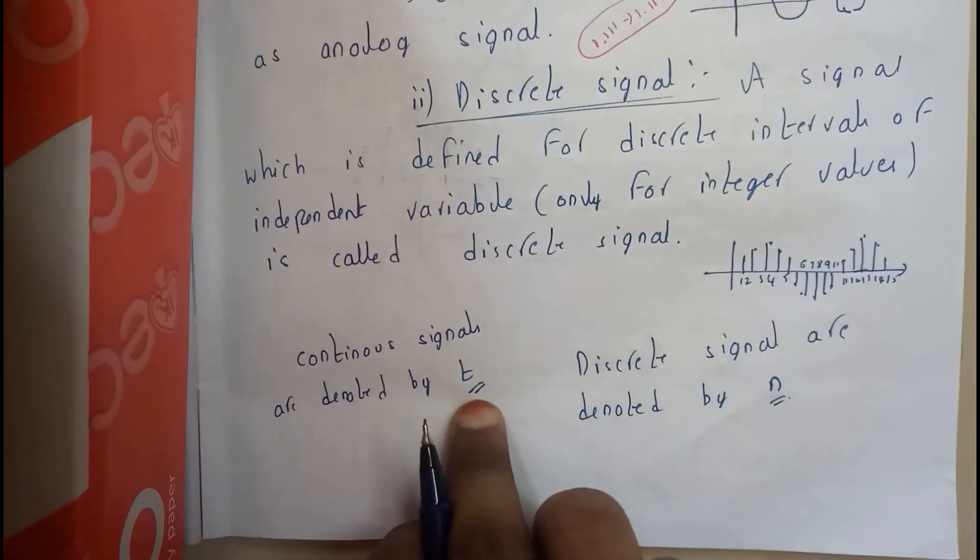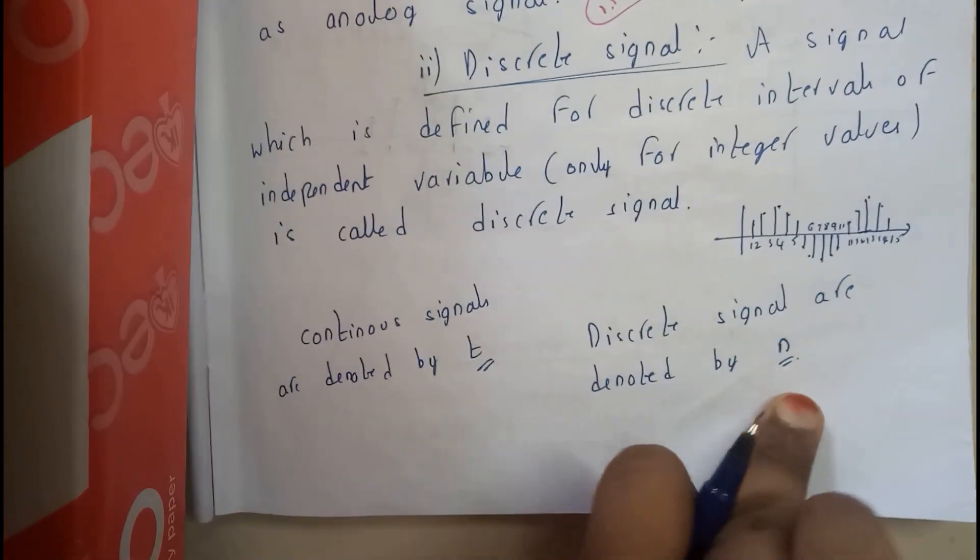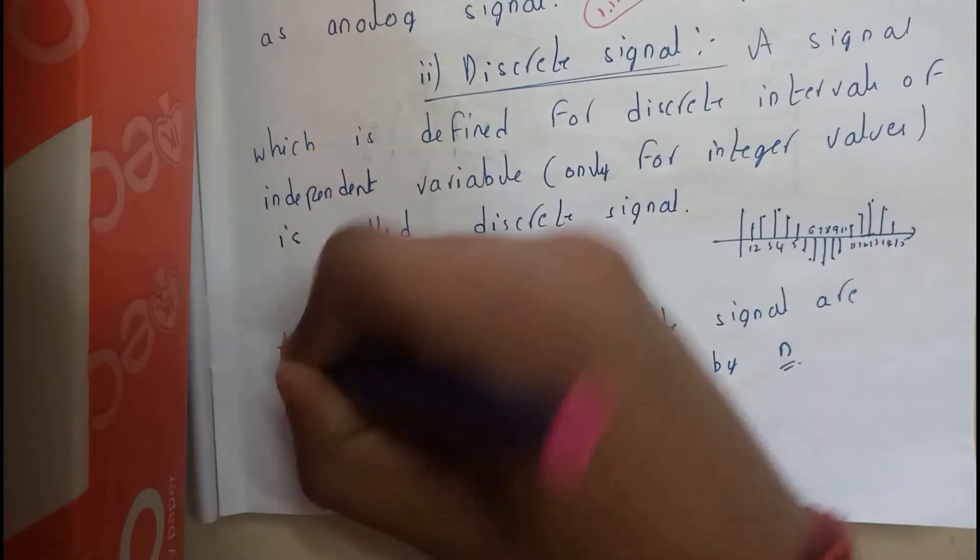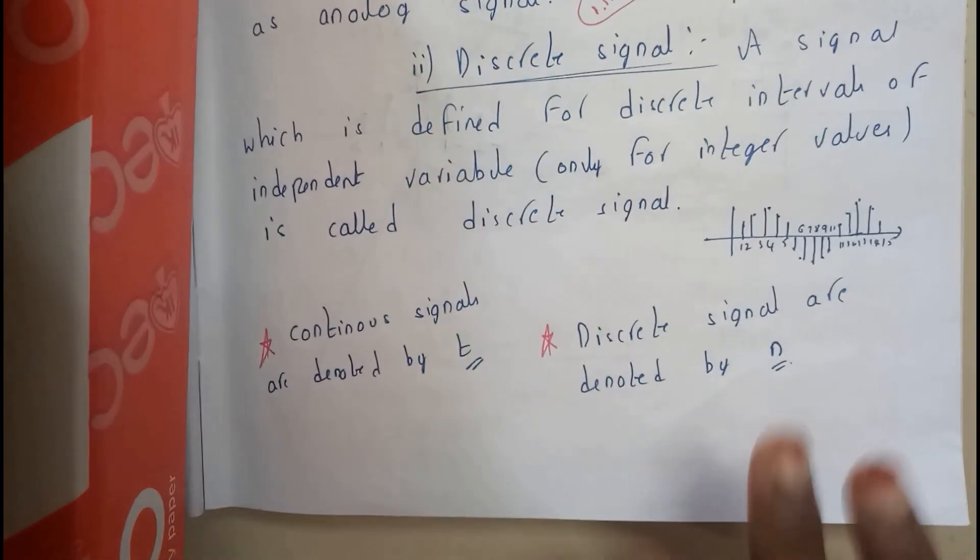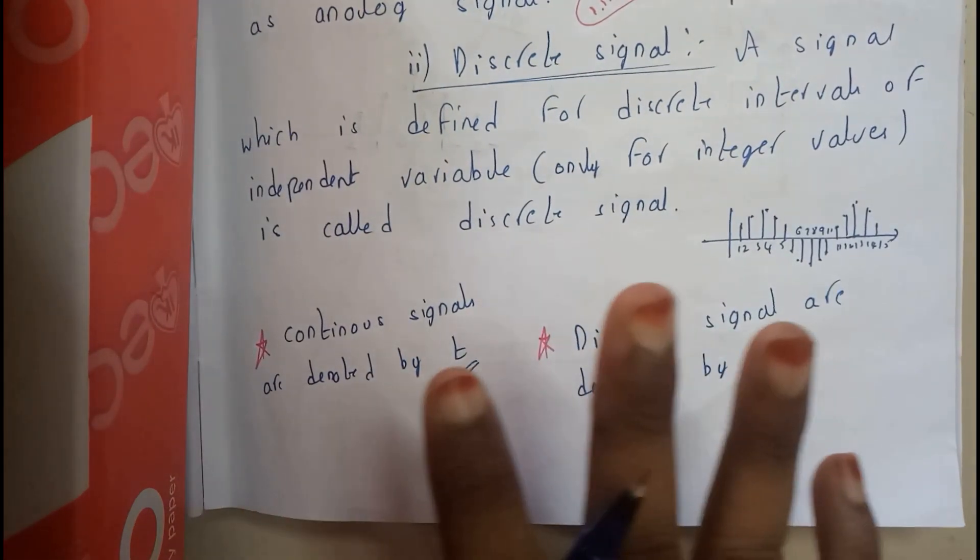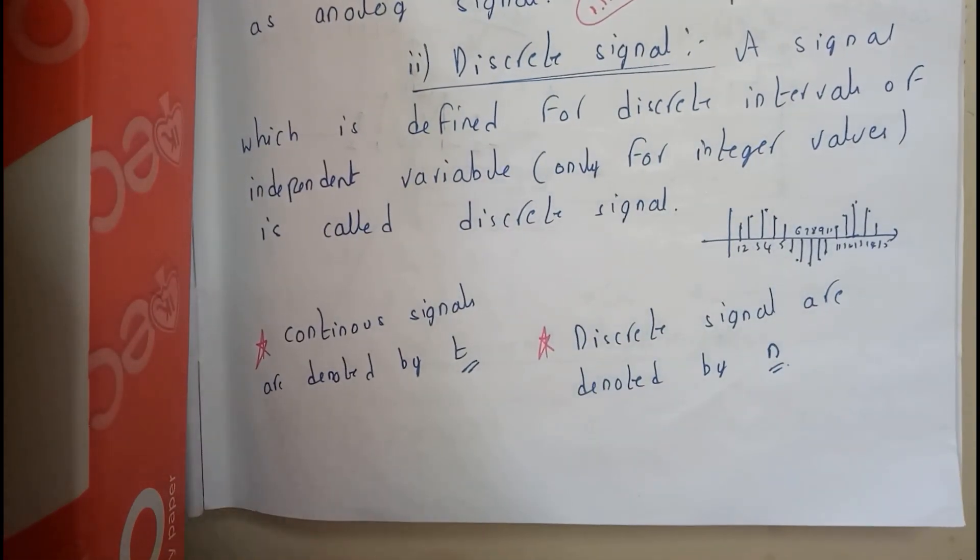Continuous signals are denoted by t and discrete signals are denoted by n. This is the most important thing. You need to remember this, it's really important.